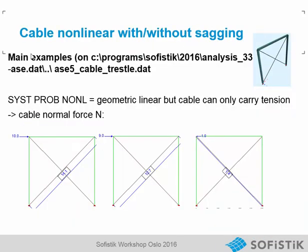The first example you can find in the example folder, file arse.5.dot. That is just a little frame and two cables. If we load the frame from the left with 10 kN, we get only a cable tension in one element. The other cable falls out if we make a non-linear analysis.